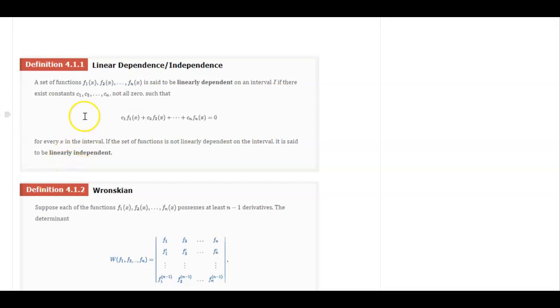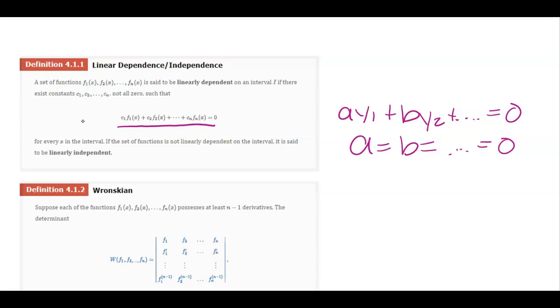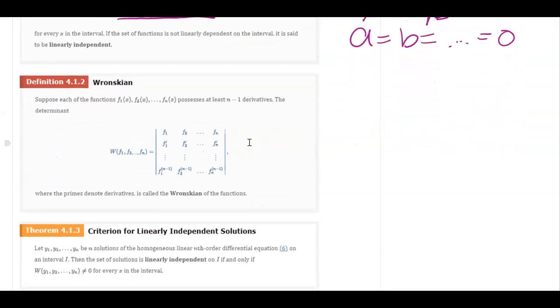The next thing that we would have to check before we can put these together is that they are linearly independent. What that means is that if you put them all in a constant times y1 plus a constant times y2, that they are only equal to zero if a equals b equals zero. That there is no way for us to kind of cancel out these y's by just multiplying by a constant.